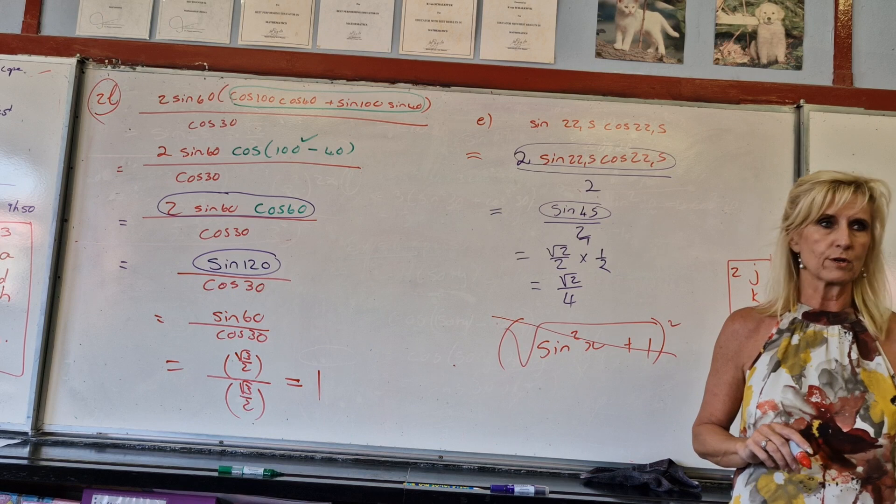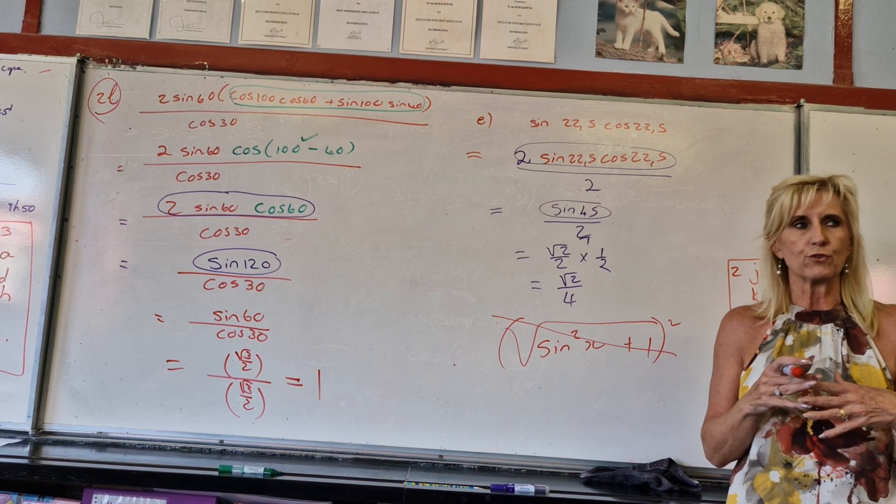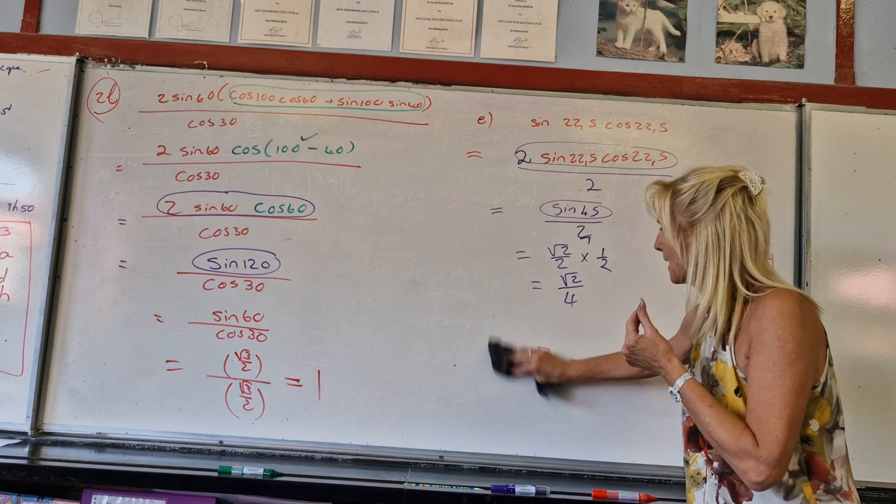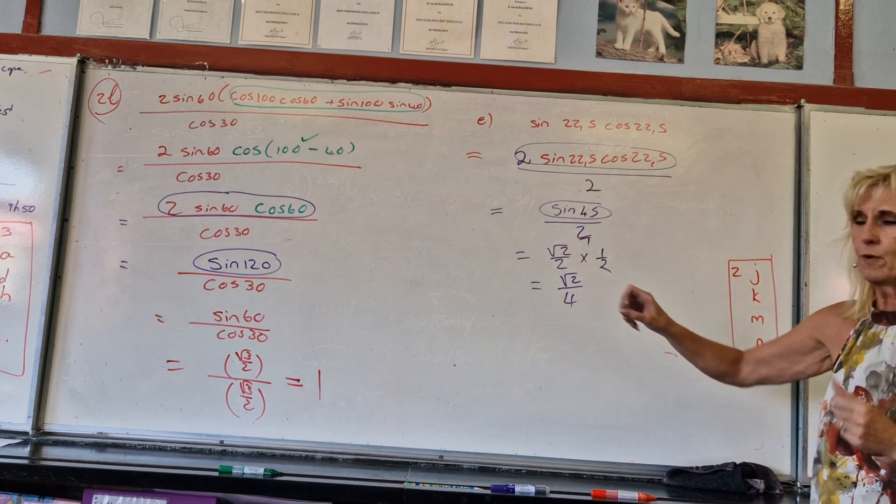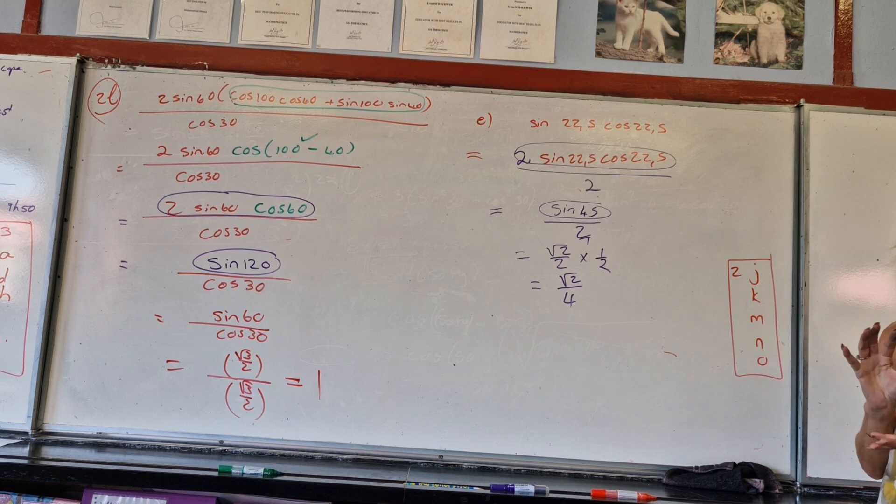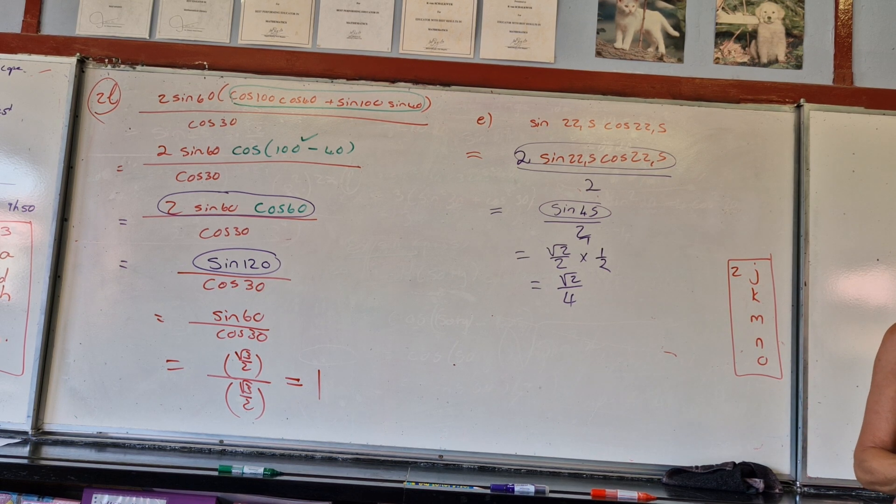This one is going to give you no more. You cannot just get rid of a root by square root. Okay, so how good? Same type of thing, just a little bit more, just to get you into the thing of compound angles and double angles, and then we'll get into the more difficult stuff.